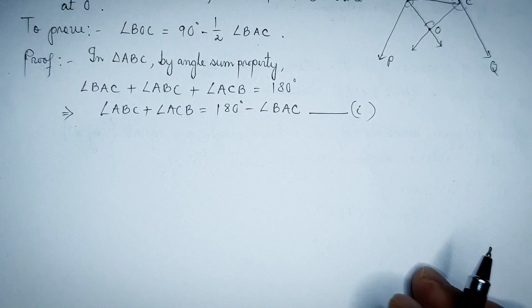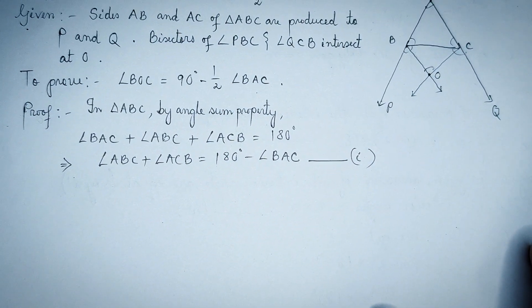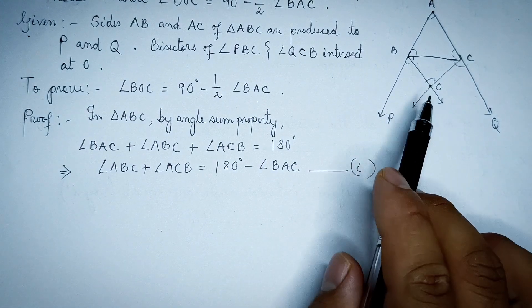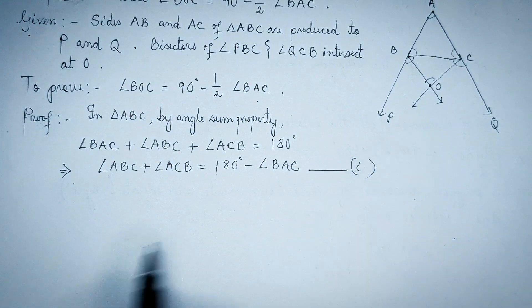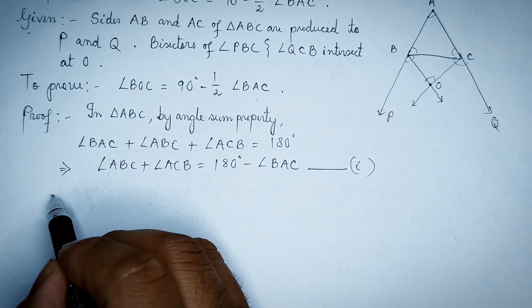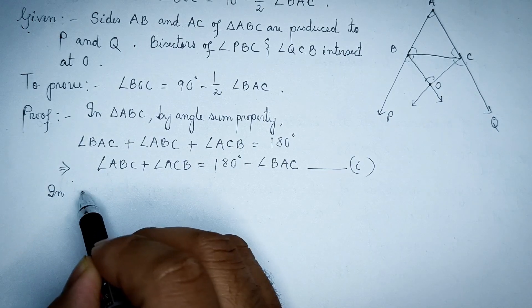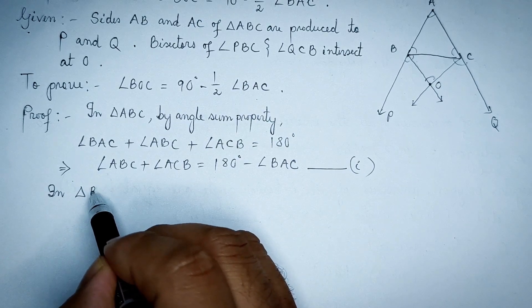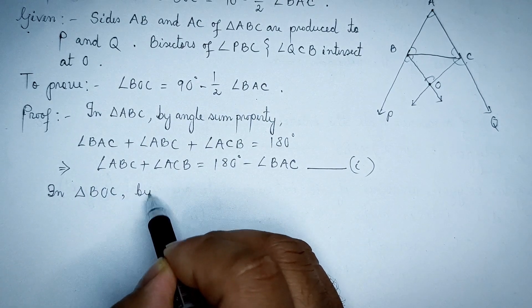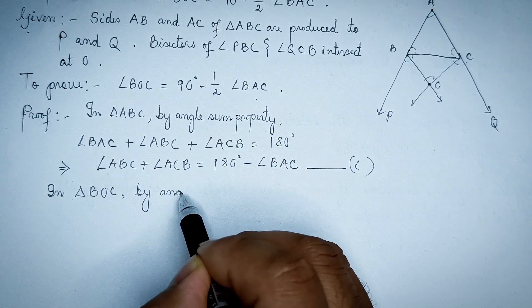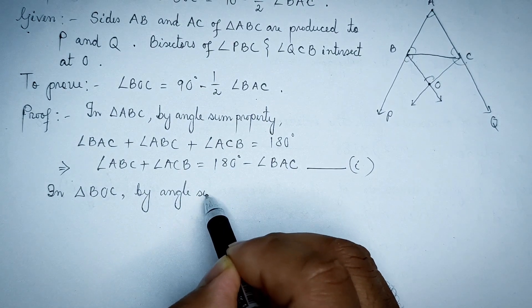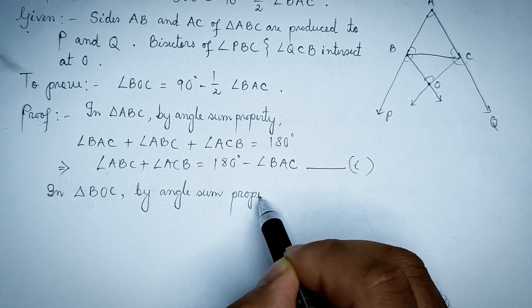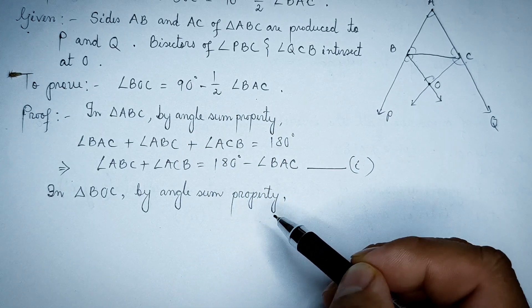In this equation, we have a triangle. This is triangle BOC. This is the angle property. In triangle BOC, by angle sum property.